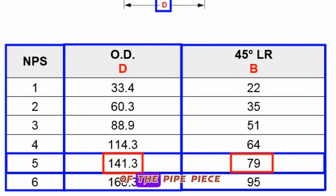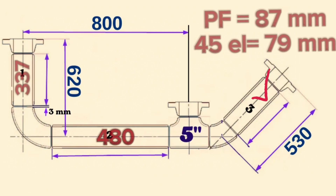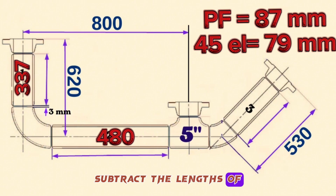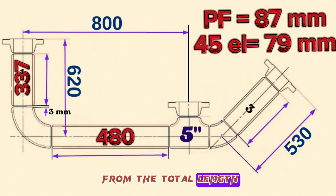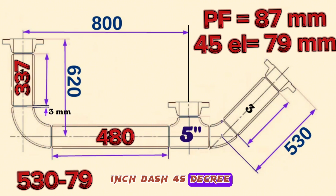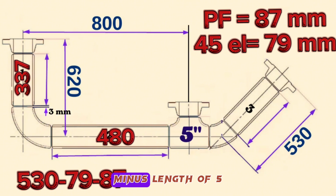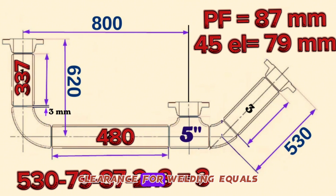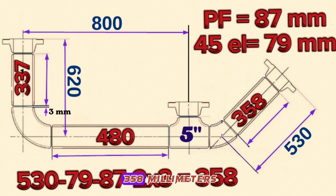Let's calculate the length of pipe piece Item 3. To find the length, subtract the lengths of the 45-degree elbow and the weld neck flange from the total length. Overall length 530 mm, minus 5-inch 45-degree long radius butt weld elbow 79 mm, minus 5-inch weld neck flange 87 mm, minus twice 3 mm clearance for welding, equals 358 millimeters.